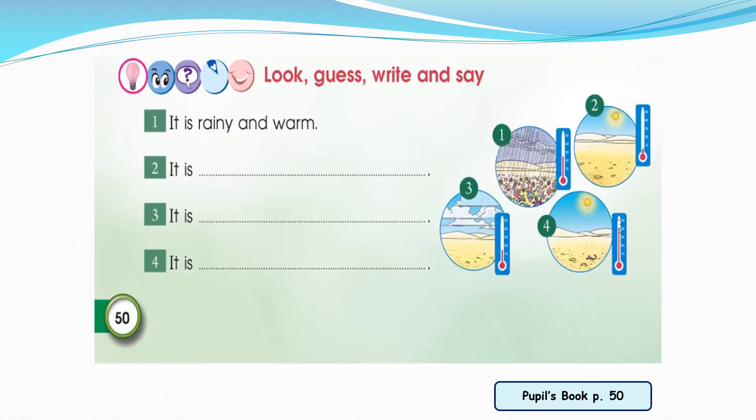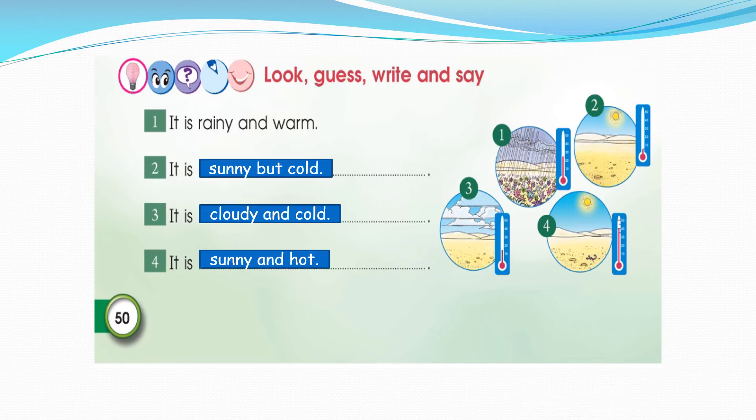Now let's go to the second question — look, guess, and say. Number one: it's rainy and warm. Number two: it's sunny but cold. Number three: it's cloudy and cold. Number four: it's sunny and hot.